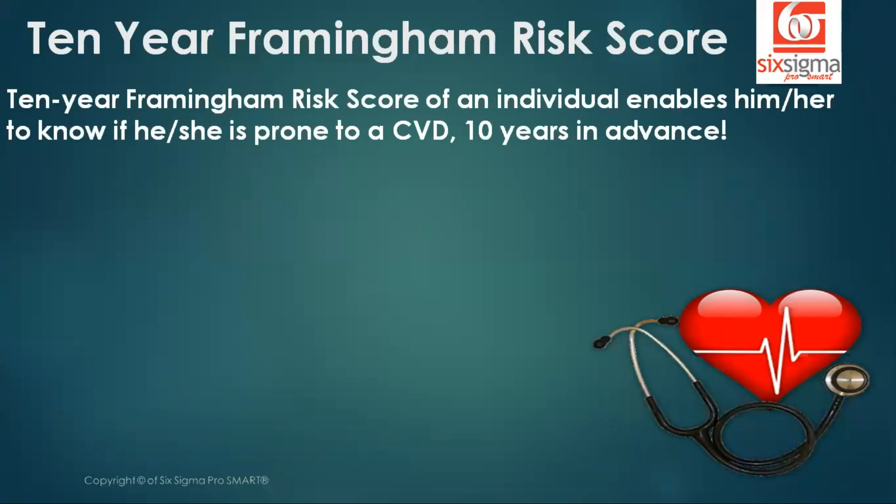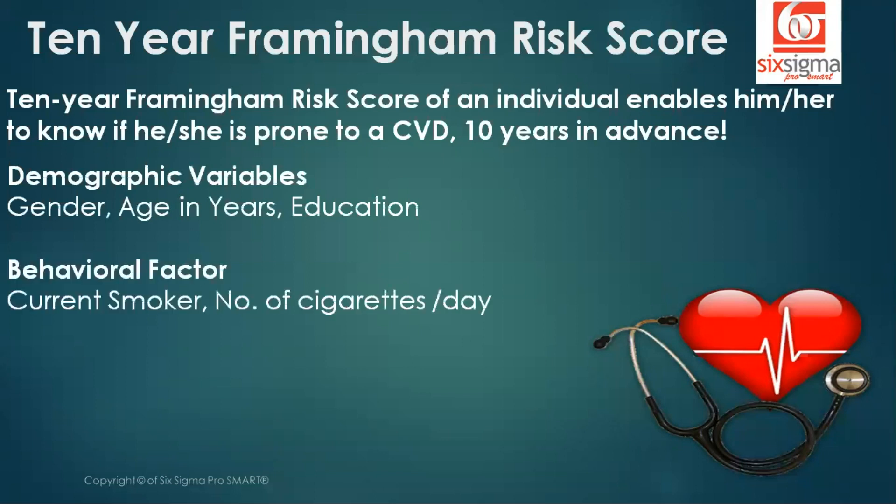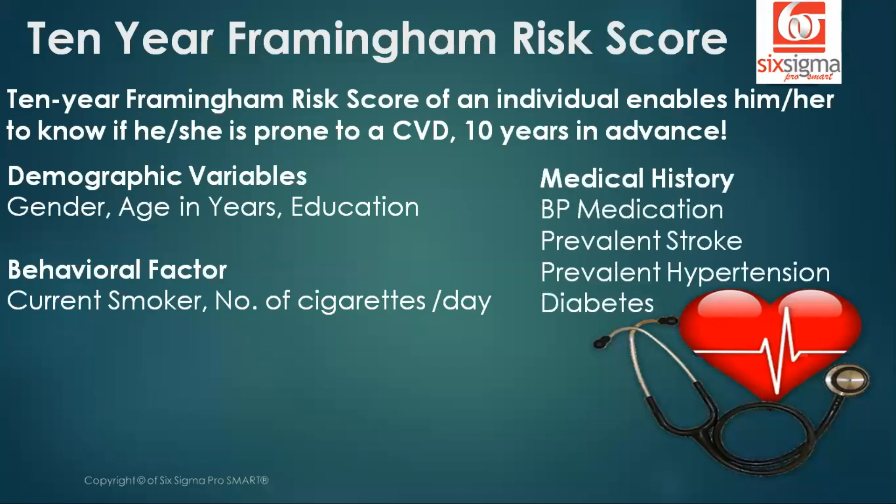Let's understand how this was studied in quantitative terms. Of course, it required collecting a lot of data. That was about the demographic variables such as gender, age and years, and education of a person. Behavioral factors such as whether the person is a smoker or not, and if he's a smoker, how many cigarettes per day. Medical history is the person already on blood pressure medication, any prevalent stroke, any prevalent hypertension, diabetes. In addition, there were tests performed at the time of admission to the research, such as the total cholesterol level, blood pressure, body mass index, heart rate, and glucose.